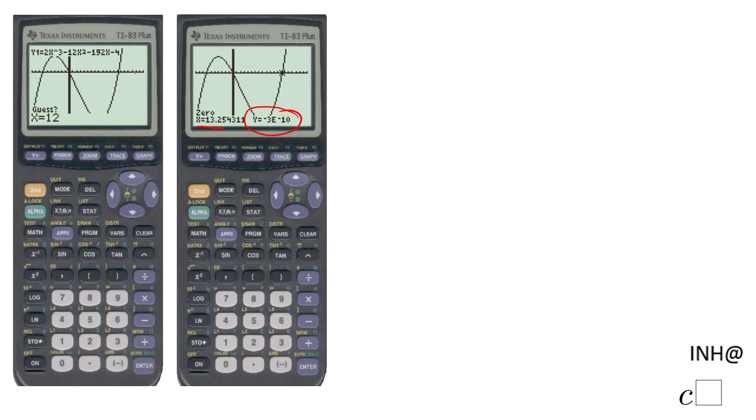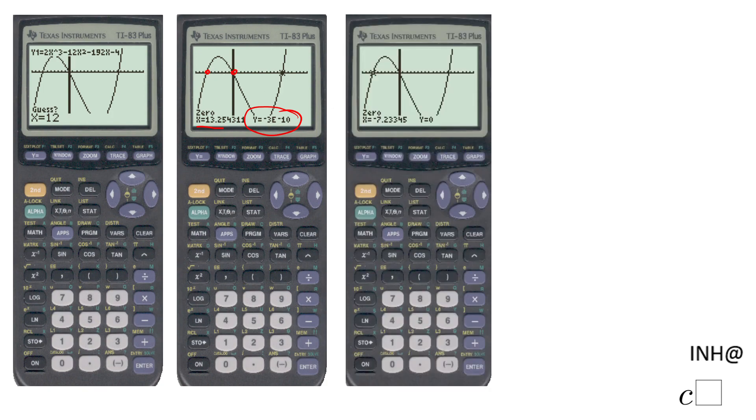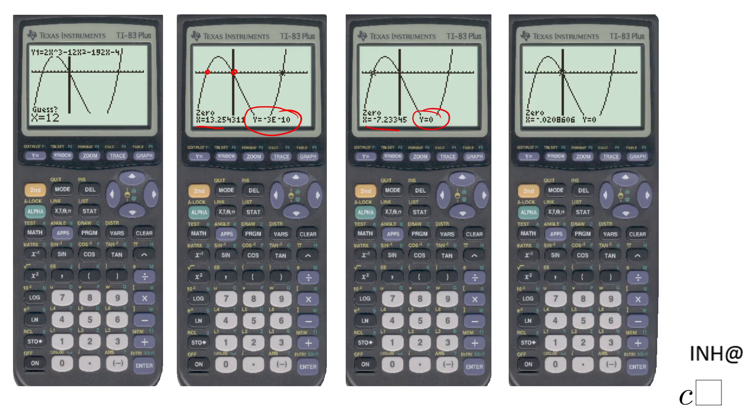Doing a similar approach, you can get the other two zeros, and you'll see them here. The first one is negative 7.23. You can try using the same process I did for the first one, and you notice y is zero. And the third one is the one right here: negative 0.208, and you'll notice y is also zero. So that's the way you find the zeros, the intercepts, x-intercepts, or the roots of a polynomial function.